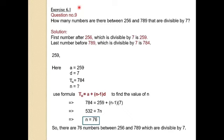The next question is question number 9. The question says: how many numbers are there between 256 and 789 that are divisible by 7? Now, there is no arithmetic progression directly given here — no n, no tn, no first term, no common difference given explicitly.